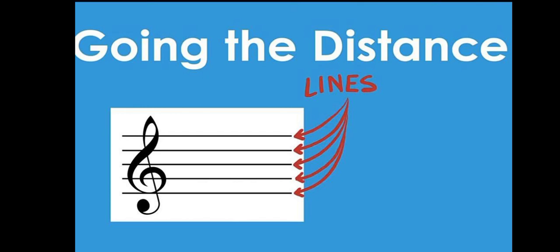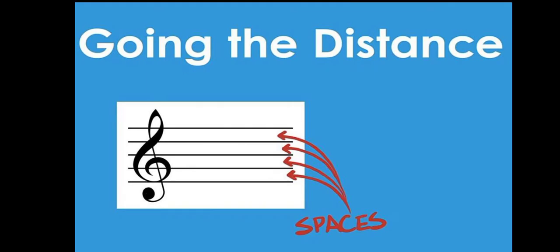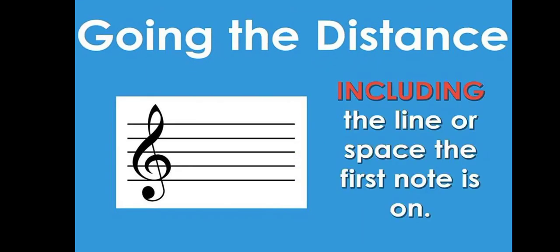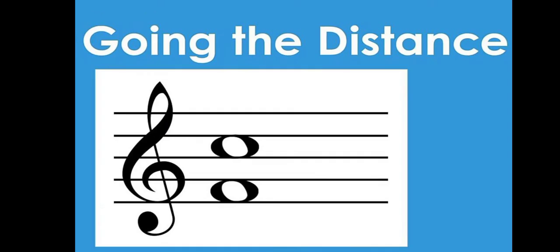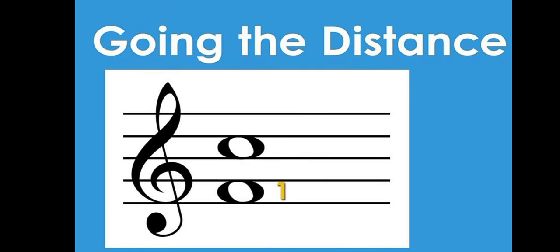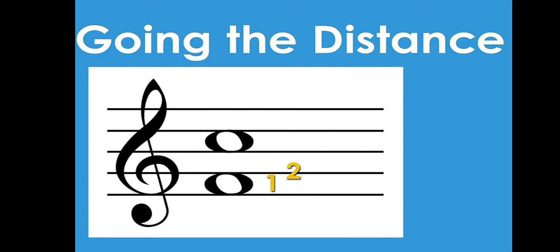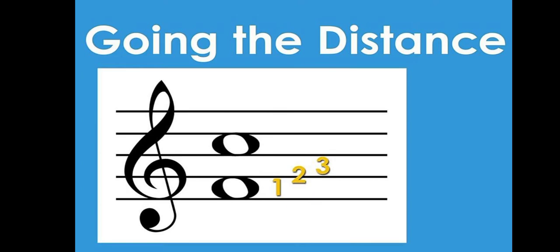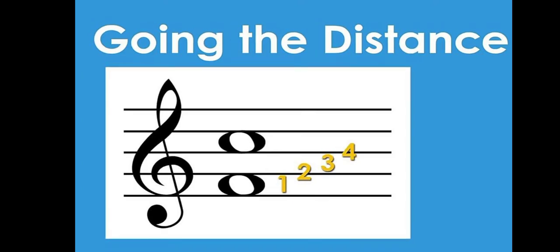For the distance, we count the distance between the two notes by considering the number of lines and spaces between them, including the line or space the first note is on. Looking at this first example, the first note is in the space F and the next one is in the space C. So space F takes 1, line G takes 2, space A takes 3, line B takes 4, and space C takes 5. So this distance is a fifth.